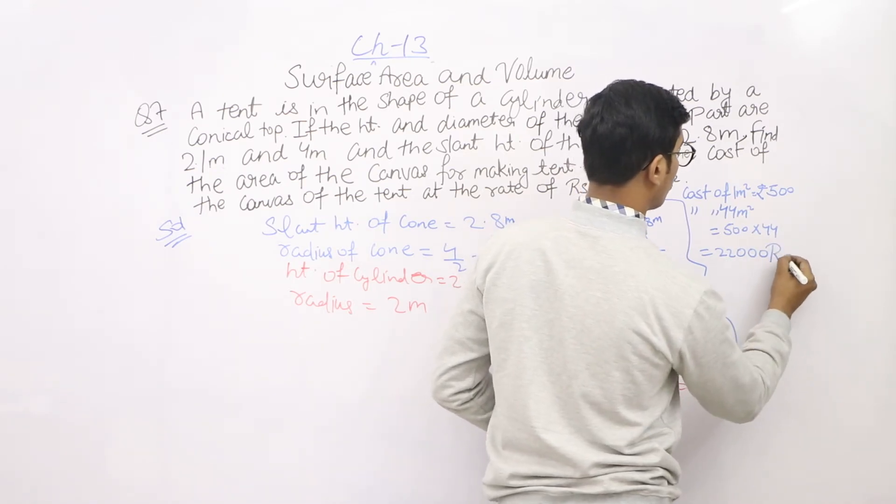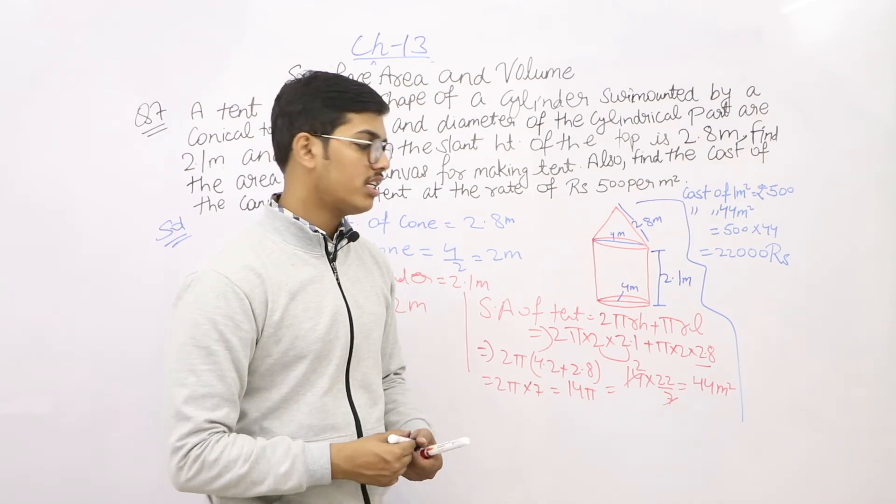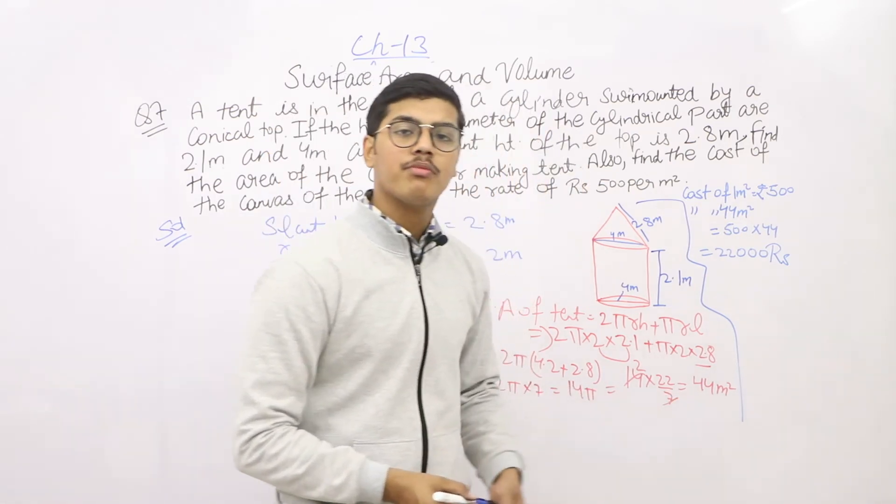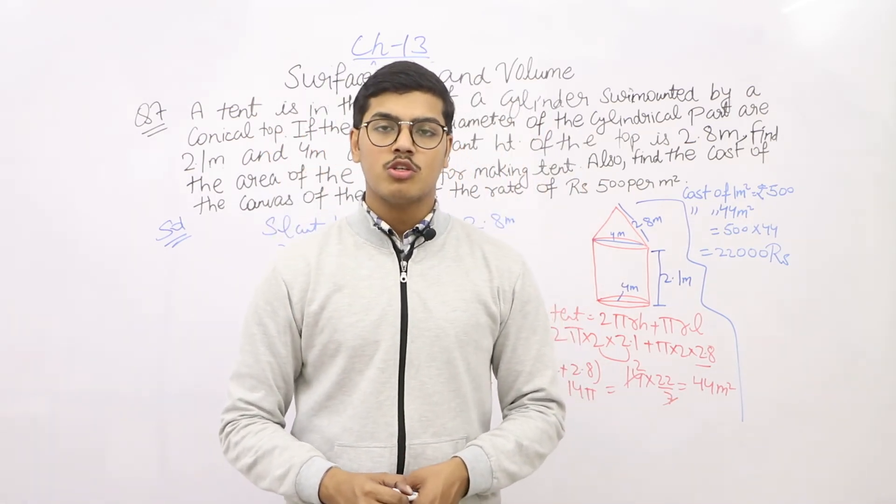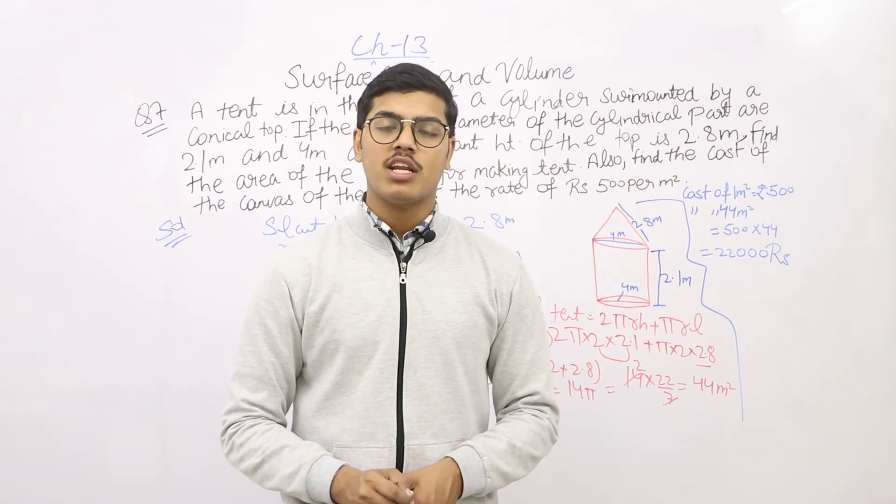Rupees 22,000. The cost is rupees 22,000 and the surface area is 44 meter square. Thank you guys, see you soon in our next video of question number 8.